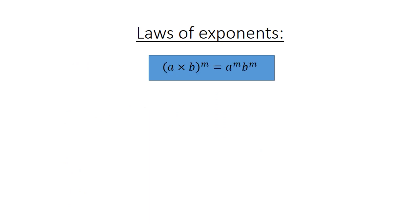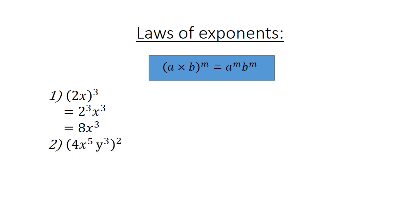In brackets, a times b to the power of m equals a to the power of m times b to the power of m. For example, in brackets 2x to the power of 3 equals 2 to the power of 3 times x to the power of 3, which equals 8x to the power of 3. In brackets 4x to the power of 5 times y to the power of 3, all to the power of 2: multiply the powers to get 4 squared times x to the power of 10 times y to the power of 6, which equals 16x to the power of 10 y to the power of 6.